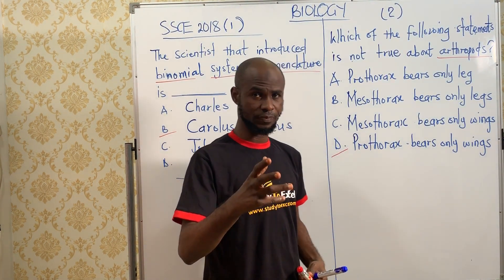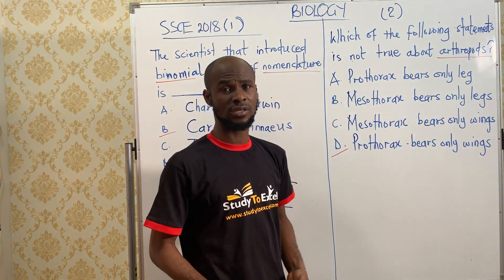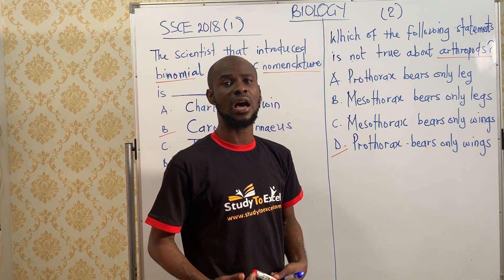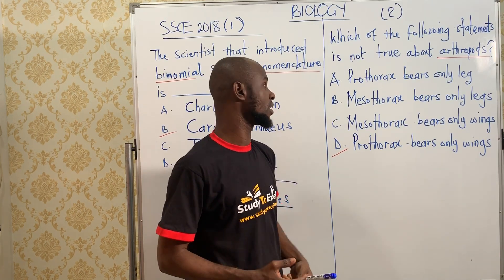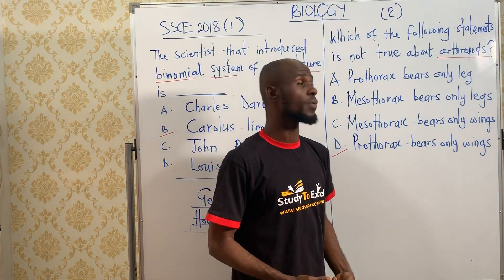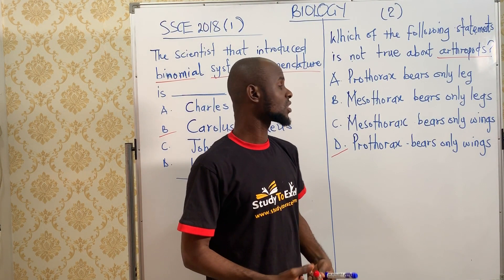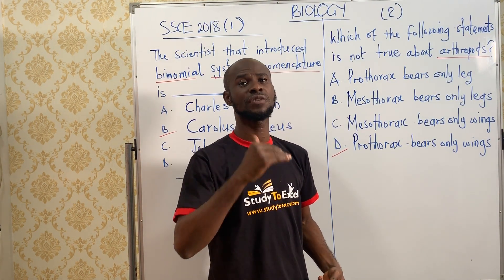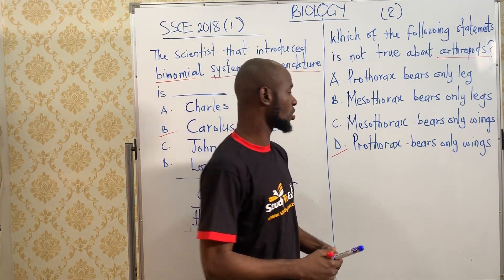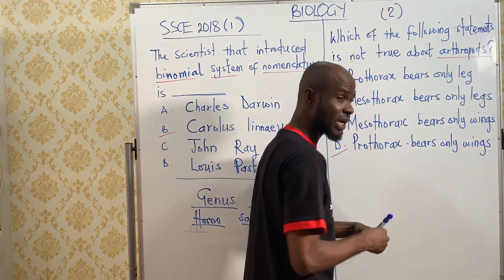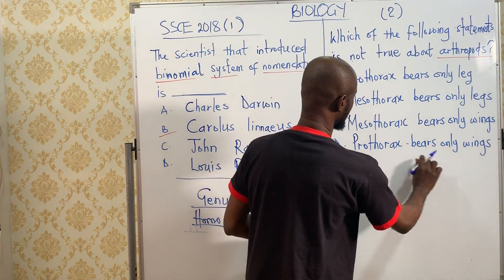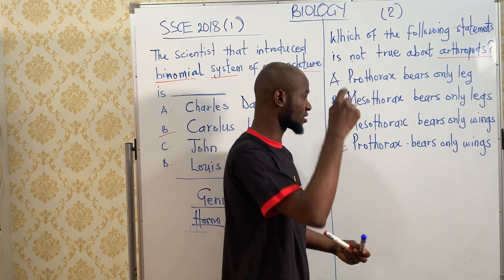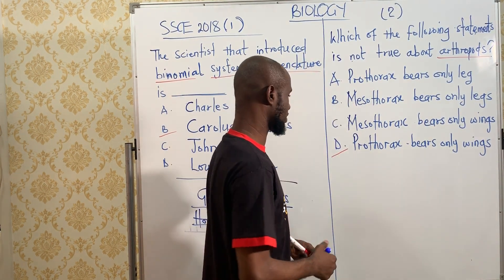In an insect or an arthropod — arthropoda is the largest group of invertebrates, and the largest class under the phylum Arthropoda is the insects. A typical arthropod or insect has three divisions of the body. The first one is called the head. Let me draw it because of time, so you can see that prothorax bearing only wings is not correct.